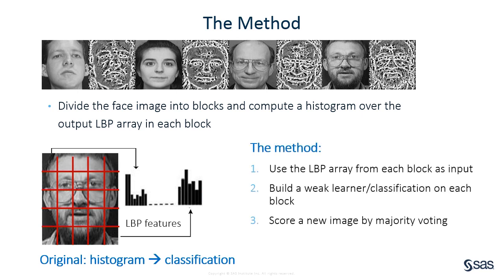Our method is different. We work on the LBP arrays directly instead of the histograms. We also divide images into blocks and build a classification model within blocks for the same location. Each model only sees part of the whole image, so it is considered a weak learner. For example, if we divide the image into 5x5 blocks, we then yield 25 weak learners, and the final classification is done by majority voting of all the weak learners.